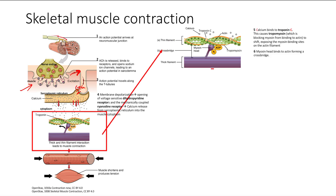Calcium is now in the cytoplasm, and we're going to look at a couple of structures. We have a thin filament — muscle is made up of two main protein filaments. One is actin, the thin filament, and then we have the thick filament, which is myosin. You need the myosin to bind to the actin.